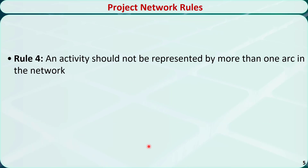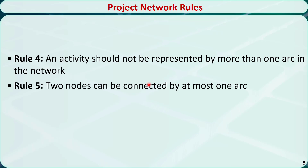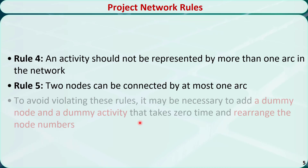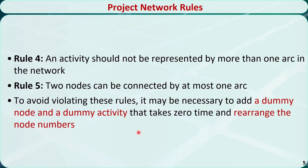Rule 4: an activity should be represented by only one arc in the network. Rule 5: two nodes should not be connected by more than one arc. To avoid violating these rules, it may be necessary to add a dummy node and a dummy activity that takes zero time, and rearrange the node numbers.